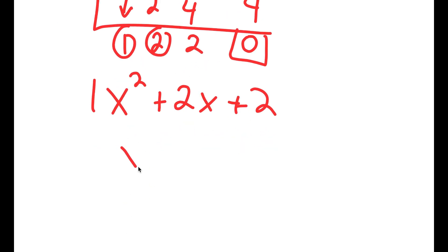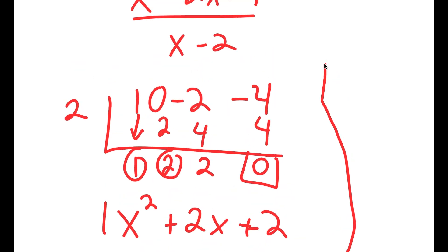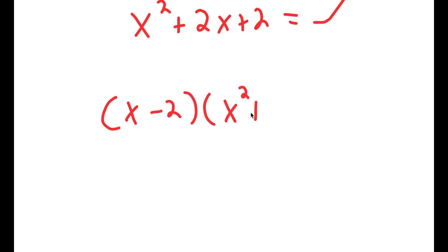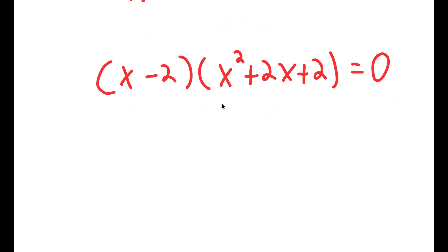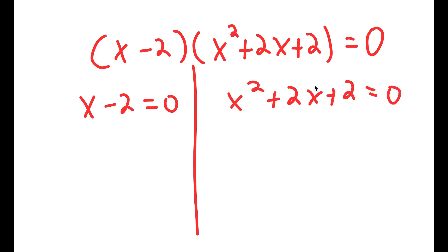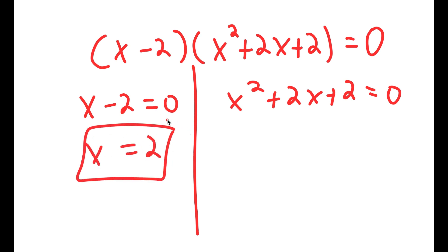So x to the power of 3 minus 2x minus 4 factors as x minus 2 times x squared plus 2x plus 2, which equals 0. From x minus 2 equals 0, we get x equals 2 — which is the solution we already found, so no surprise there.